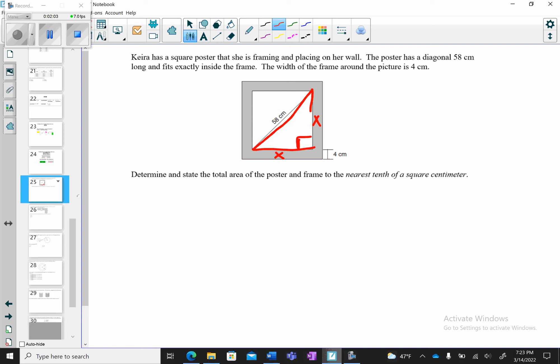And look, it's a right triangle. We know how to find the sides of a right triangle using Pythagorean theorem. a² + b² = c². So the x's are my legs. So x² + x² is equal to my hypotenuse, which is 58².